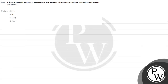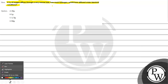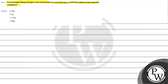Let's read this question. The question says: if 4 grams of oxygen diffuses through a very narrow hole, how much hydrogen would have diffused under identical conditions? Option A: 16 grams. Option B: 1 gram. Option C: 1/4 gram. Option D: 64 grams.